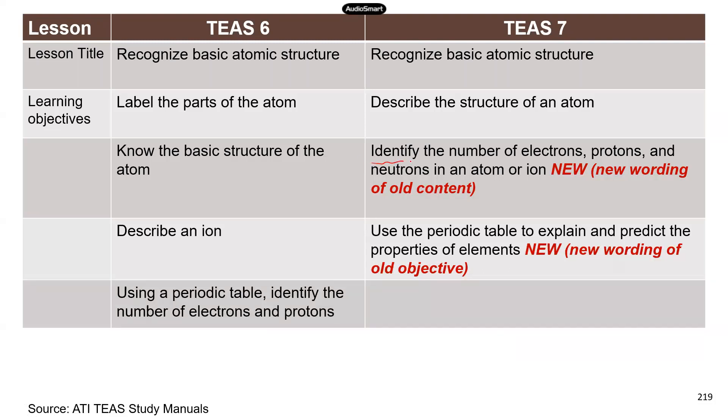First, you have identified the number of electrons, protons, and neutrons in an atom or an ion. This is exactly what questions that I have seen on the ATI mock test. You need to figure out the numbers of electrons, protons, or neutrons with given information. And then the second new-ish thing is use the periodic table to explain and predict the properties of elements. And you can see previously, it's identified the number of electrons and protons using the periodic table, right? It didn't mention anything about the chemical properties of elements.